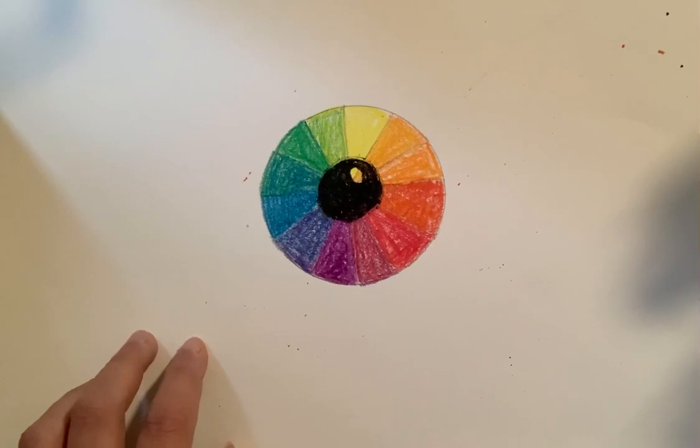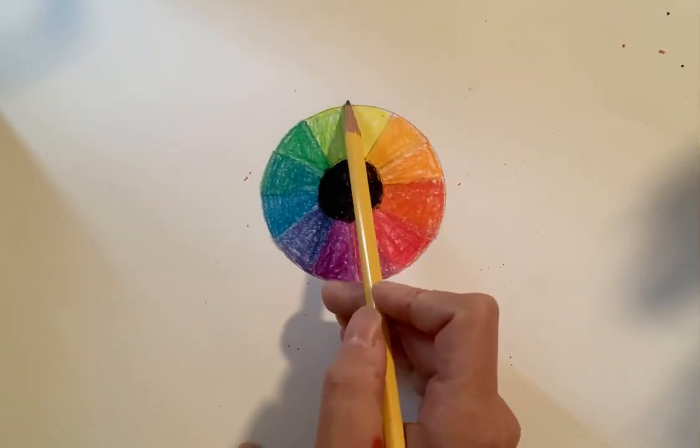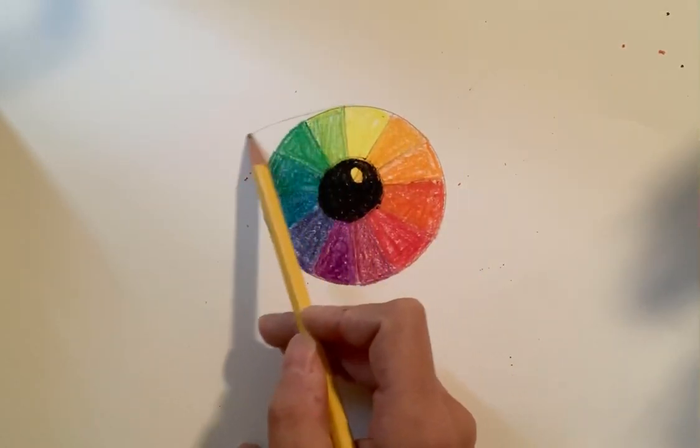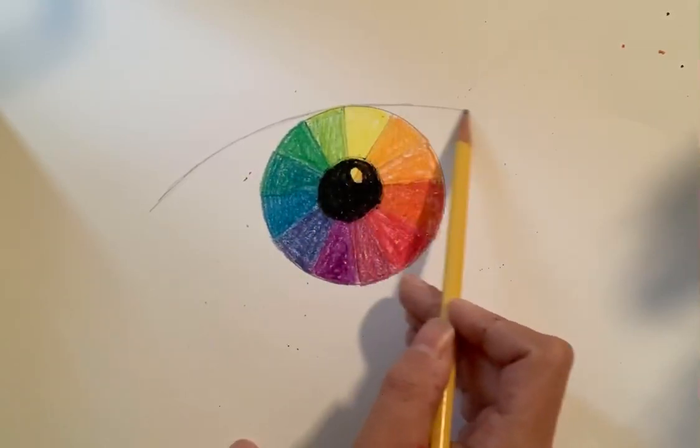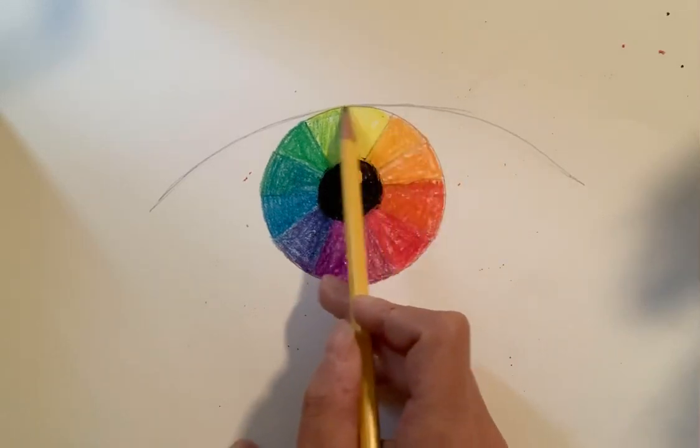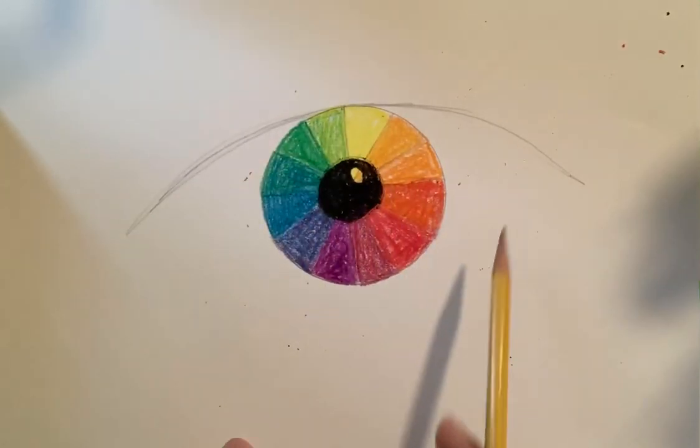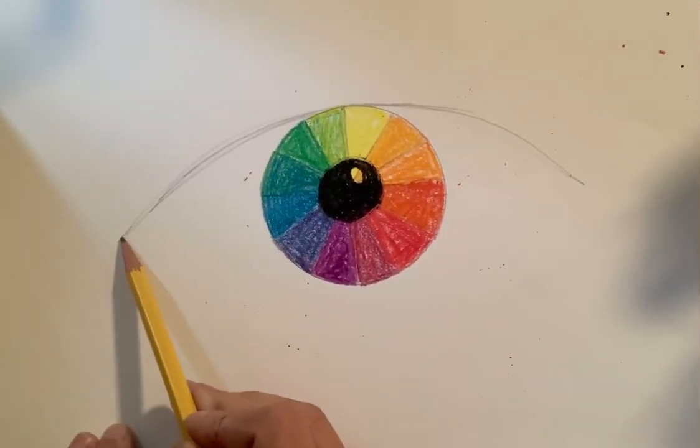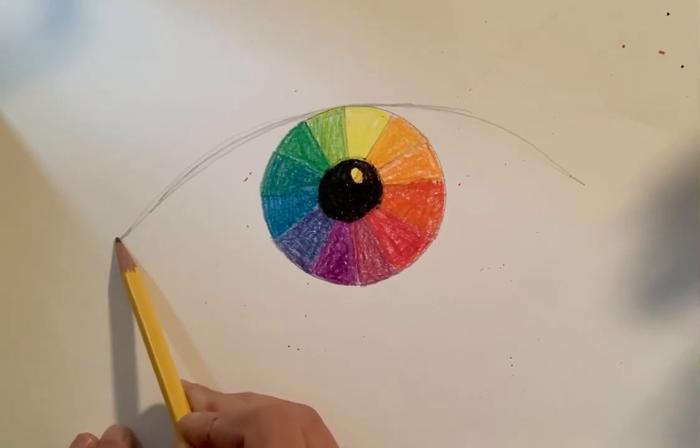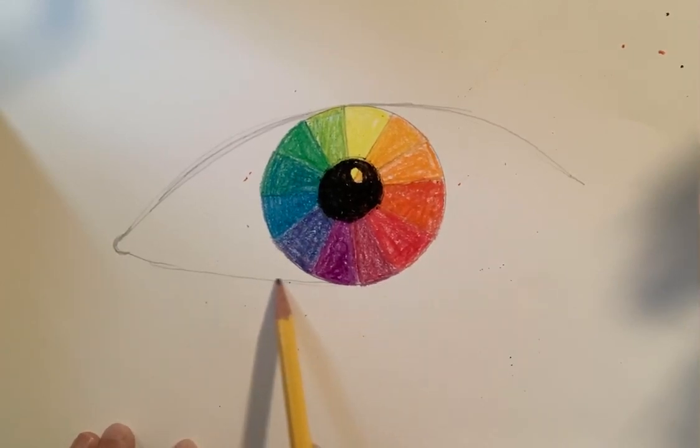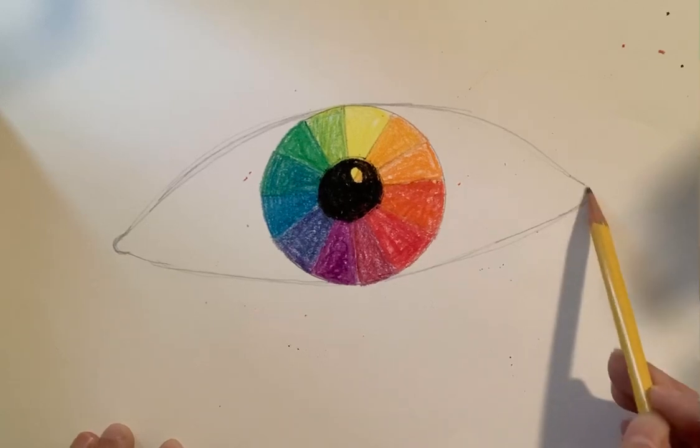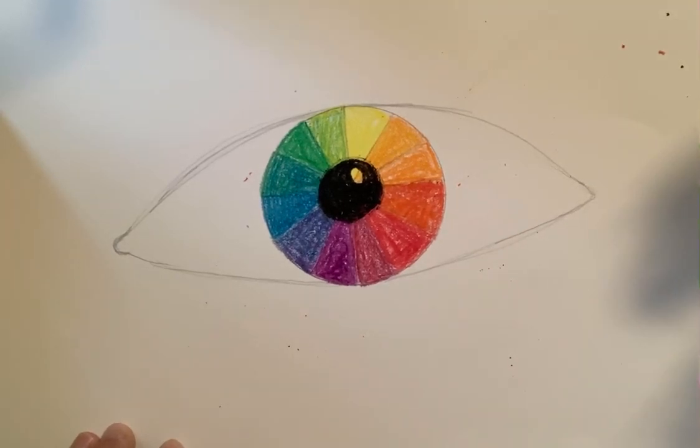Then I'm going to use a pencil and I'm going to basically make a little curved line that comes out on both sides. On this side I might make a little curl and again I'm going to go to the bottom of the eye and over. We're going to turn this into an eyeball.